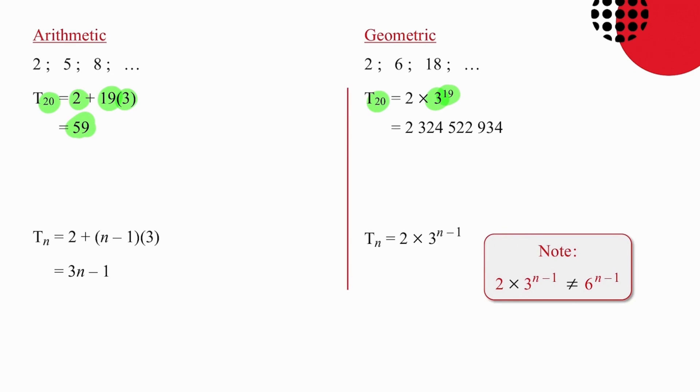The geometric sequence, the 20th term is 2, which is the first term, multiplied by the ratio to the power of 19.